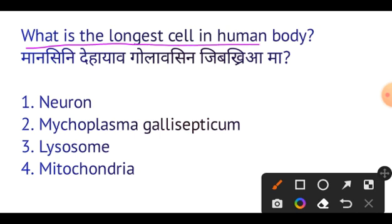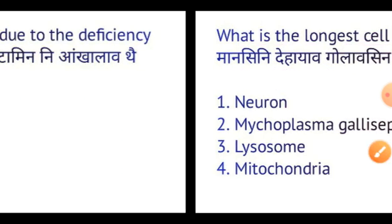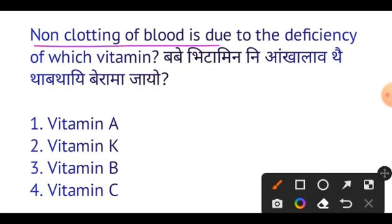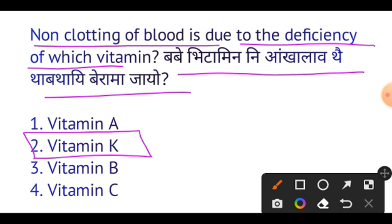Next question: What is the longest cell in the human body? The longest cell in the human body is the Neuron — very important. Next question: Non-clotting of blood is due to the deficiency of which vitamin? The answer is Vitamin K. Vitamin K deficiency causes non-clotting of blood.